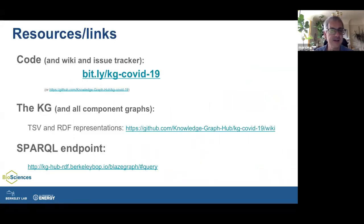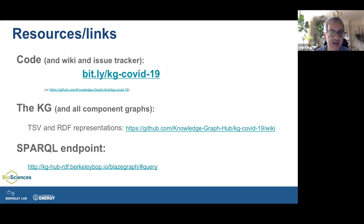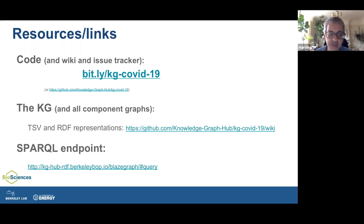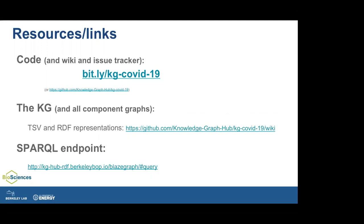The wiki and issue tracker can be found on GitHub via the bit.ly link. You can clone the repo and run it as-is — you'll need an internet connection and some free disk space. The NT file of triples for KG COVID currently exceeds 30 gigabytes. TSV and RDF representations are available on the wiki, along with the SPARQL endpoint.